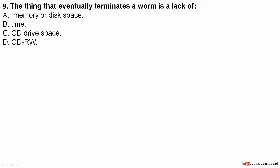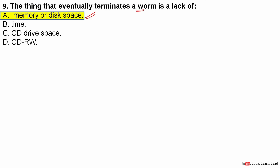Next question: the thing that eventually terminates a worm. As discussed, a worm can self-replicate using a host computer until there is no more space. The answer is a lack of memory or disk space — if the disk space is full, the worm will terminate. That is the only thing that can stop a worm.